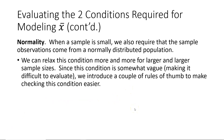Instead of the success-failure condition used when working with sample proportions, the second condition required for modeling x-bar is called normality. When a sample is small, we also require that the sample observations come from a normally distributed population. However, we can relax this condition more and more for larger and larger sample sizes.